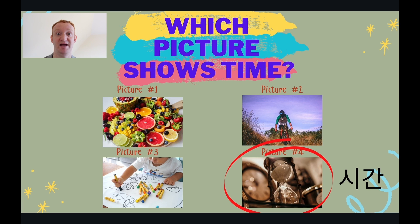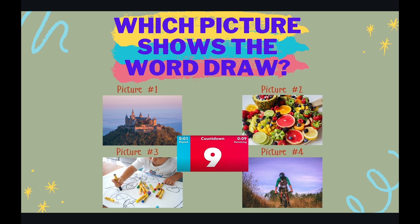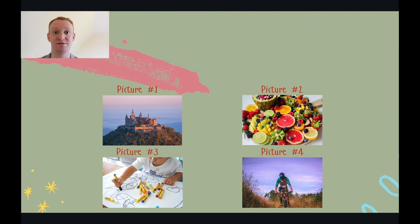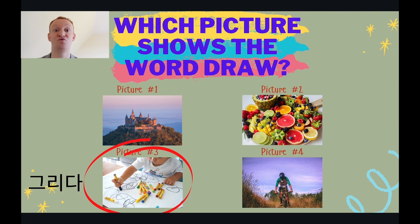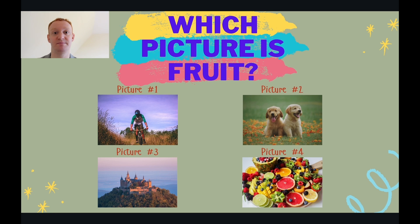Next question: which picture shows us the word 'draw'? You have ten seconds. The answer is picture three shows the word draw. The child is drawing. The child is using pens to draw. The child is using crayons to draw. Can you draw better than this child? Let me know.